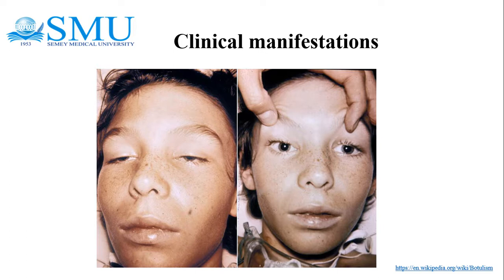Adult intestinal botulism and iatrogenic botulism also occur. Iatrogenic botulism results from injection of overdoses of the toxin when used for therapeutic purposes.